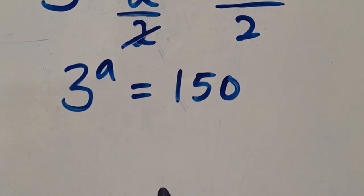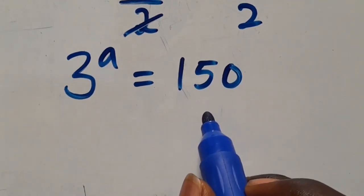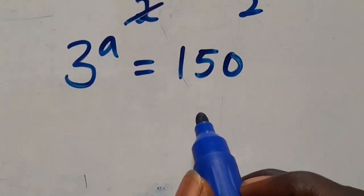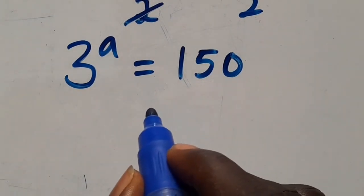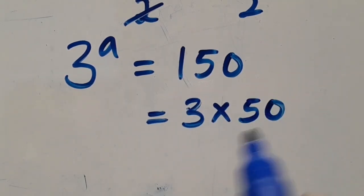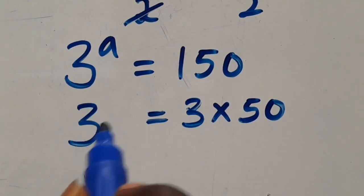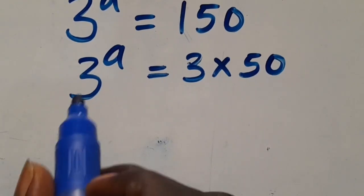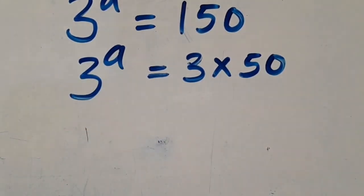From here, let's express 150 as a product of two numbers: 50 times 3. So we have 3 times 50 equals 150, and everything equals 3 to the power of a. The next thing is we want to get the value of a.